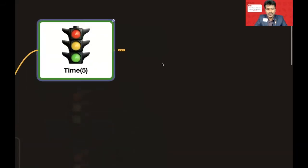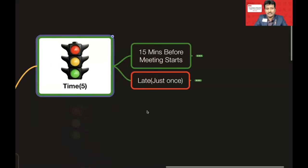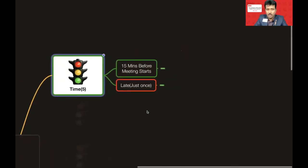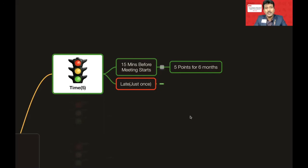The first category is Time. If you are on time — that is, logging in 15 minutes before your meeting starts — you will get 5 points. This applies throughout the six-month period. Some chapters start at 8:00, some at 7:45, depending on chapter size, so you need to join accordingly.